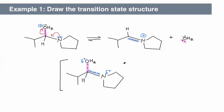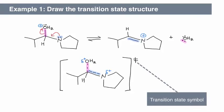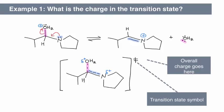Enclose the whole structure in square brackets. Add a transition state symbol, a double dagger. Finally, put the overall charge beside the transition state symbol. What is the overall charge for this transition state? The overall charge here is positive one.